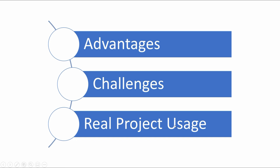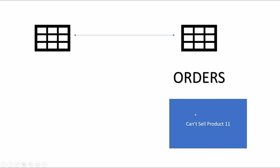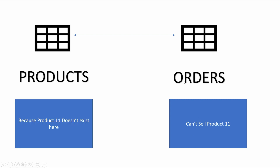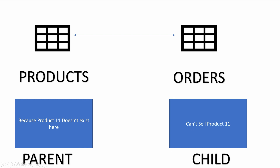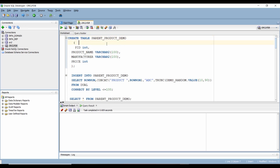Foreign keys are basically used to link two tables and ensure that a child cannot have a record which is not present in the parent. For example, you cannot sell a product which is not present on your shelf or inventory. Usually in our database or OLAP system, dimension tables are the parent tables and the fact tables are the child tables. Let's create both of them and see their syntax.